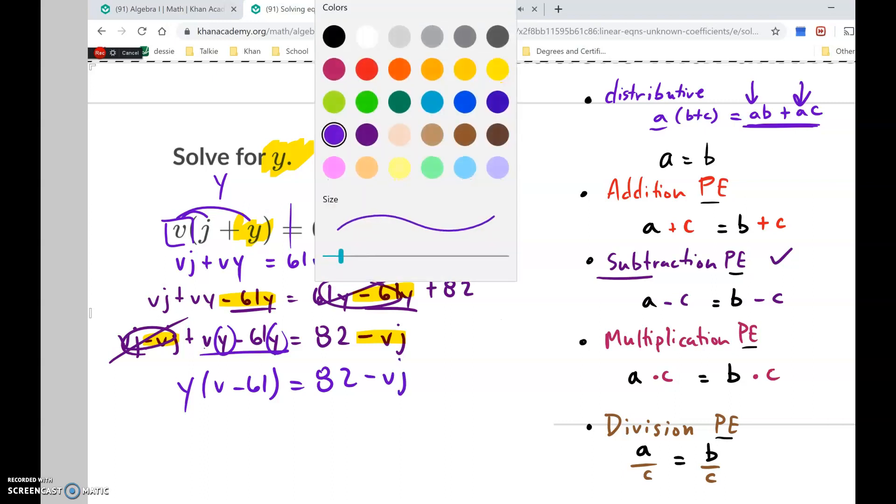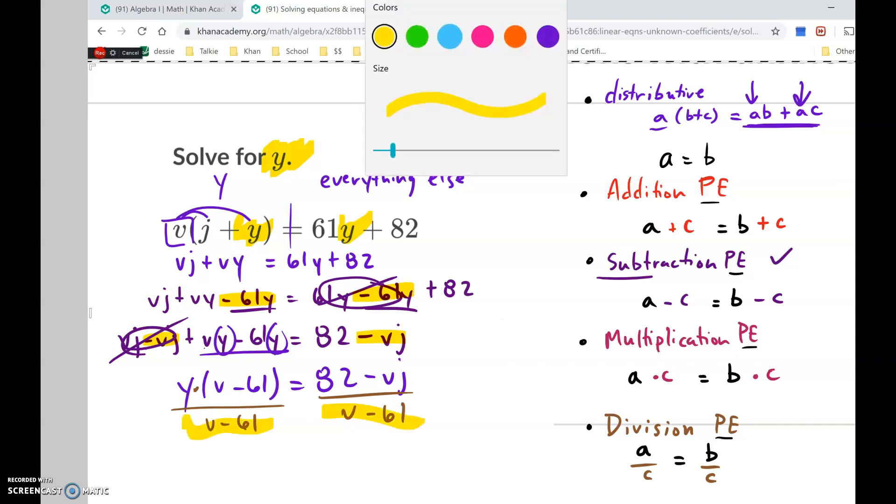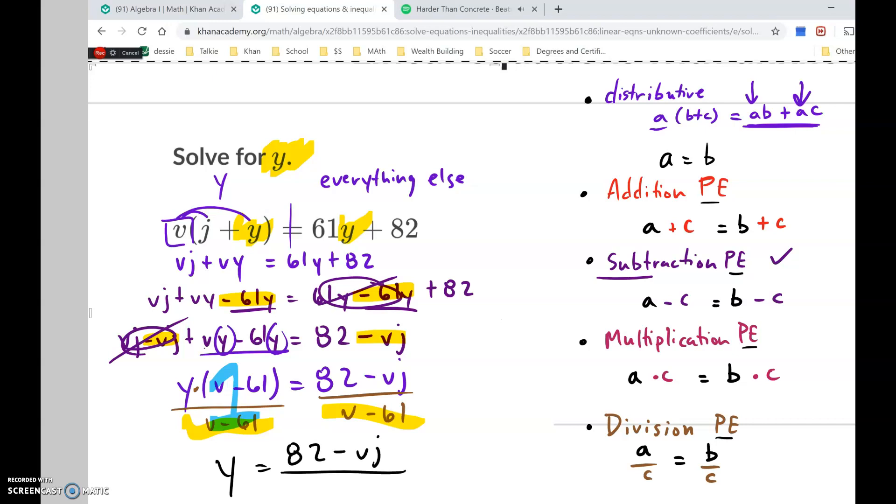And now the last step is to eliminate this v minus 61. Well, since the y is being multiplied, distribution is multiplication, the inverse of multiplication would be to divide. So we're going to divide this left side by what we want to eliminate. And we're going to divide this right side by what we want to eliminate. And we're going to simplify. When we simplify these, this divides out to one. So we have one times y. One times y is just y equals. There's nothing really here for us to simplify. So we can just leave it like this. 82 minus vj divided by v minus 61. And that would be our answer.